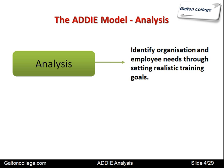For analysis, it's important to identify the organization's needs and also the employee needs, and to set realistic training goals. The organization needs may come from the mission statement — trying to see what the organization is aiming at in the next five to eight years. It's trying to see where the organization wants to be, look at employees' current skill sets, and consider what they can achieve if trained — whether updating existing skills or acquiring entirely new skills, perhaps associated with a new or emerging technology.